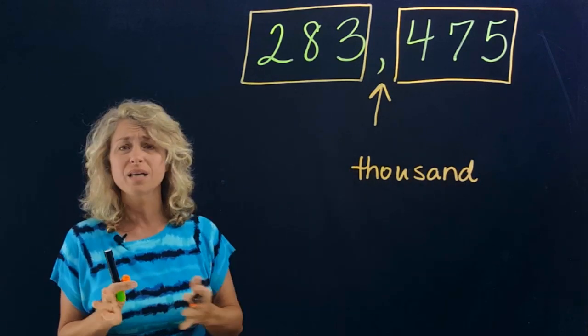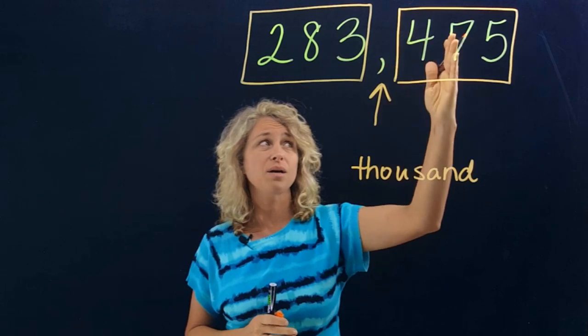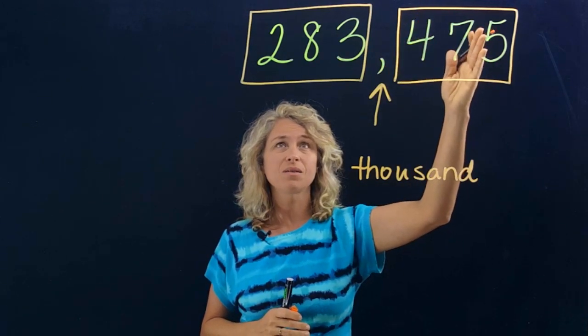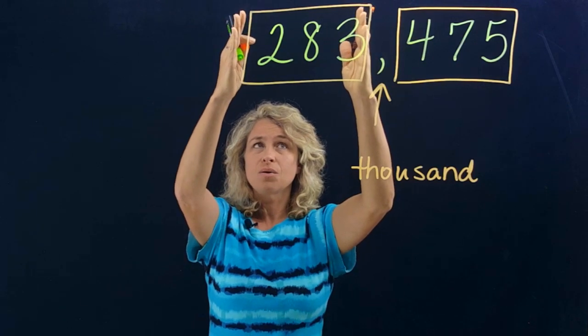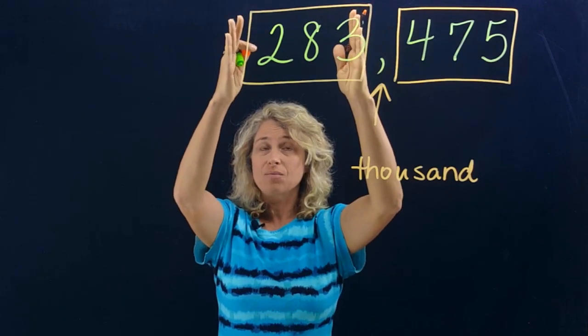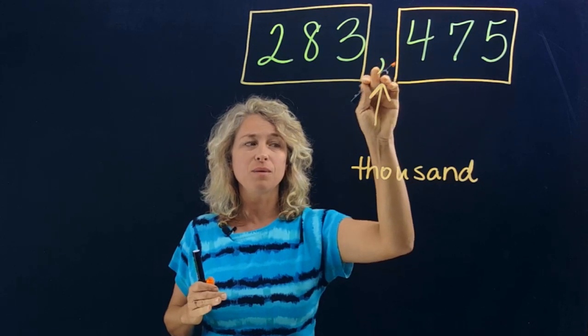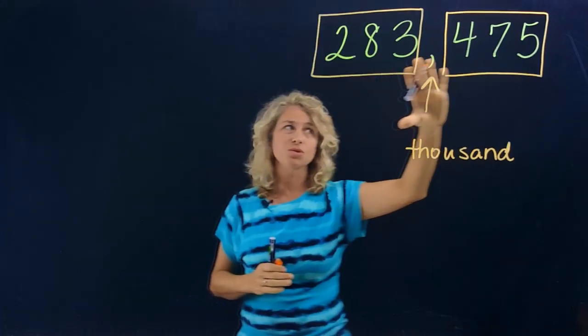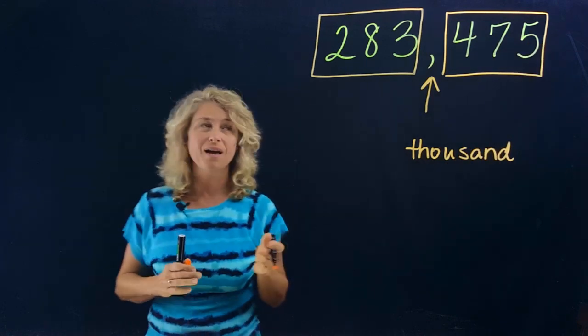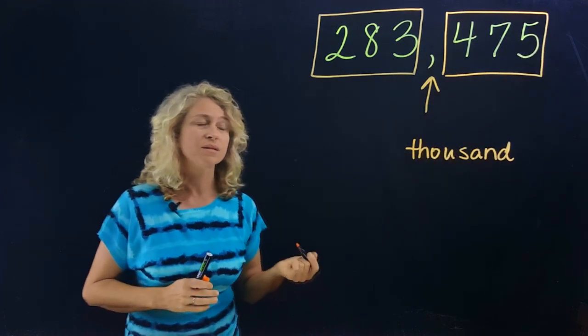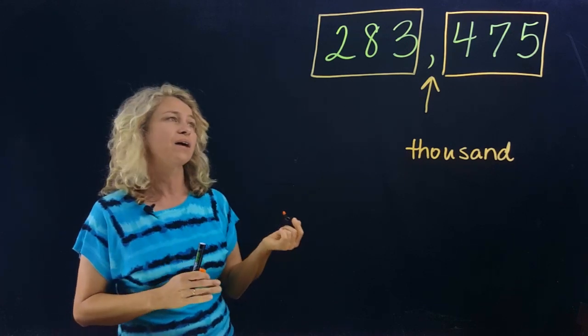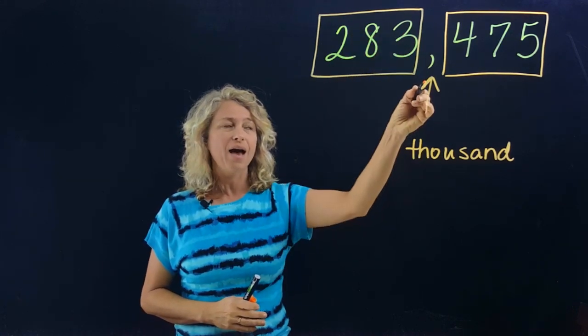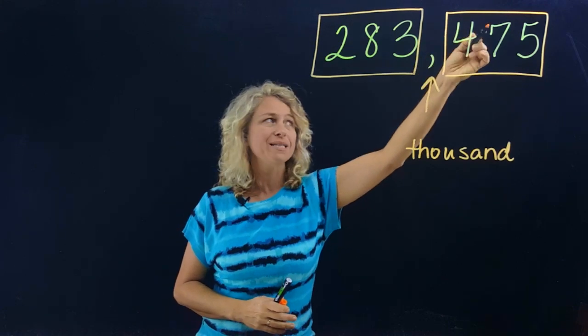So really all you have to do is be able to say a number in the hundreds place, like four hundred seventy-five. And how would you say this number? Two hundred eighty-three, right? And if you can remember that the comma means thousand, then you would be able to put this whole thing together and say it correctly. Listen to me and then we'll try one together: two hundred eighty-three thousand, four hundred seventy-five.